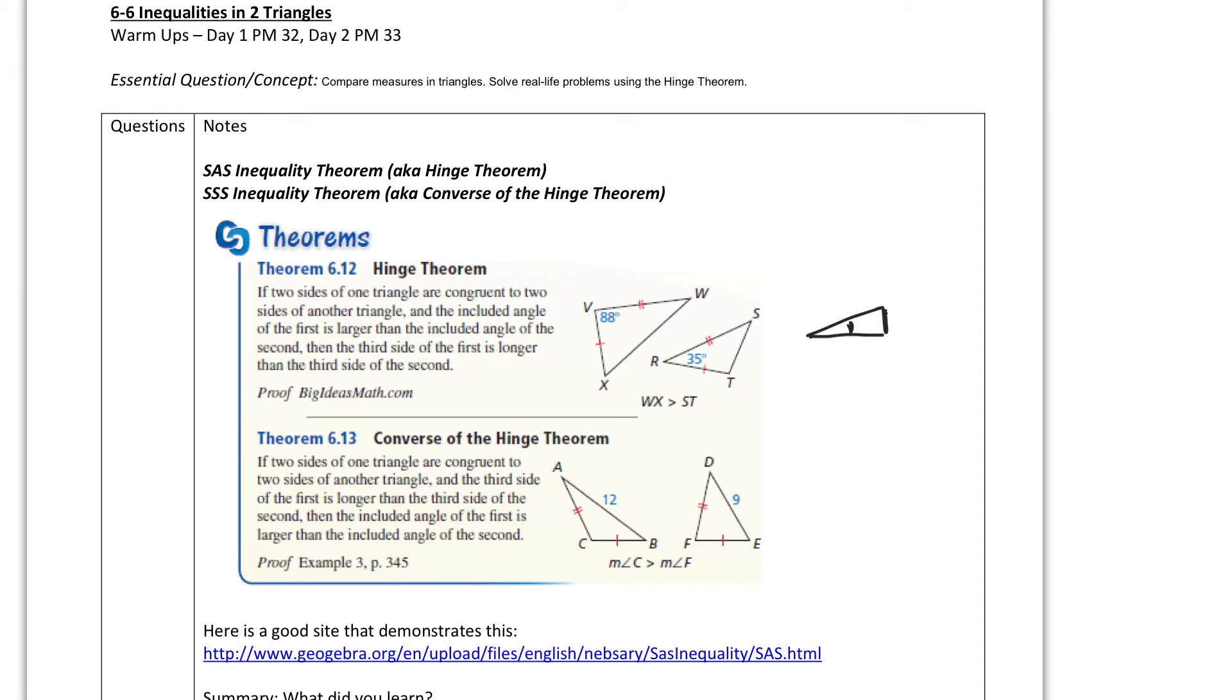And the converse of the hinge theorem is just the other way around. And this one, again, this book calls it the side-side-side inequality, but it's really the hinge theorem and the converse of the hinge theorem, where this time we are looking at the sides. If this side is congruent to that side, so two sides of one congruent to two sides of another, but the third side is bigger, then this angle will be larger than that one. So C will be bigger than F, since AB is bigger than DE.